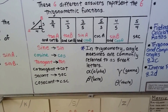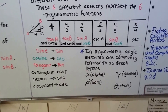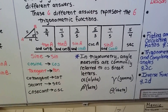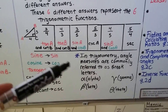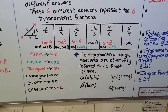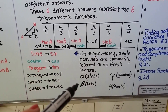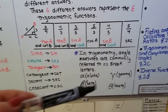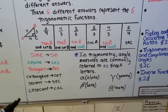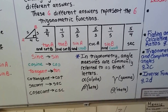I know we're in geometry, not trigonometry, but I'd like to plant a seed so that when you do take trig, you'll say, 'Oh, I kind of remember that.' In trigonometry, angle measures are commonly referred to by Greek letters — alpha, beta, gamma, theta. So instead of angle B, you might see angle theta.